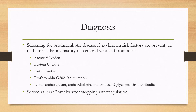Screening for a prothrombotic disease is important if there are no known risk factors such as pregnancy, or if there is a family history of cerebral venous thrombosis. Labs to send after diagnosis include factor V Leiden, protein C and S, antithrombin, the prothrombin gene mutation, lupus anticoagulant, anticardiolipin, and anti-beta-2 glycoprotein antibodies — the latter being part of antiphospholipid syndrome. Screening usually occurs at least two weeks after stopping anticoagulation, because some anticoagulants can cause false positives — for example, warfarin can decrease the levels of protein C and S.